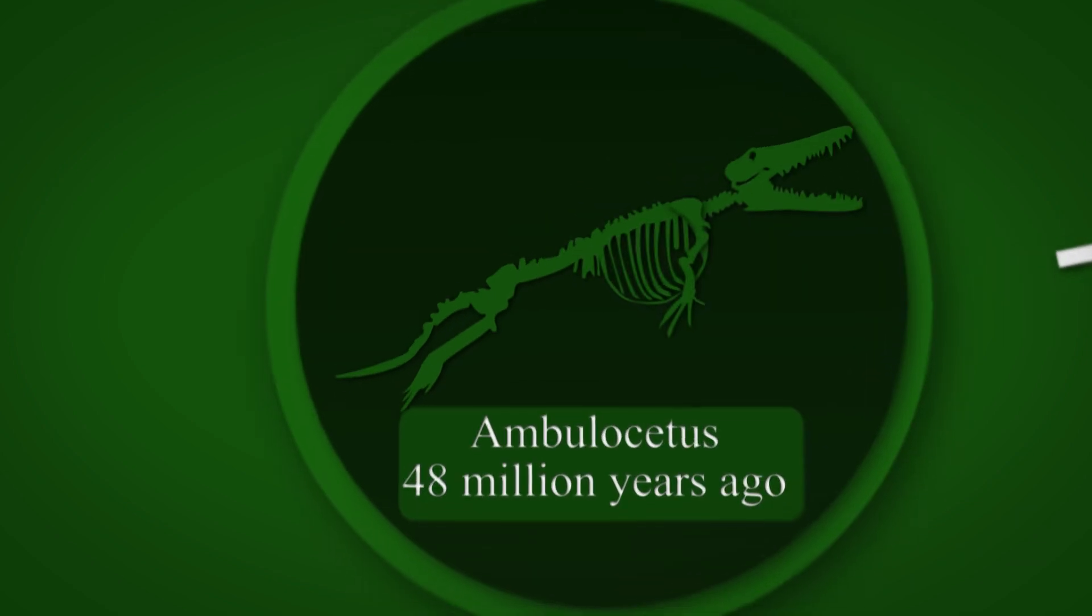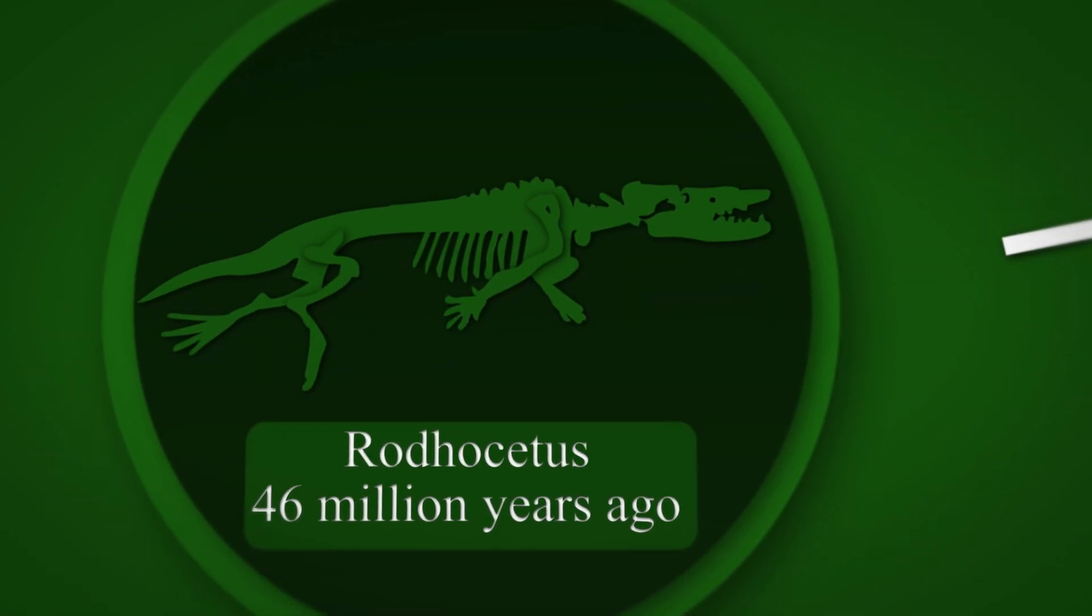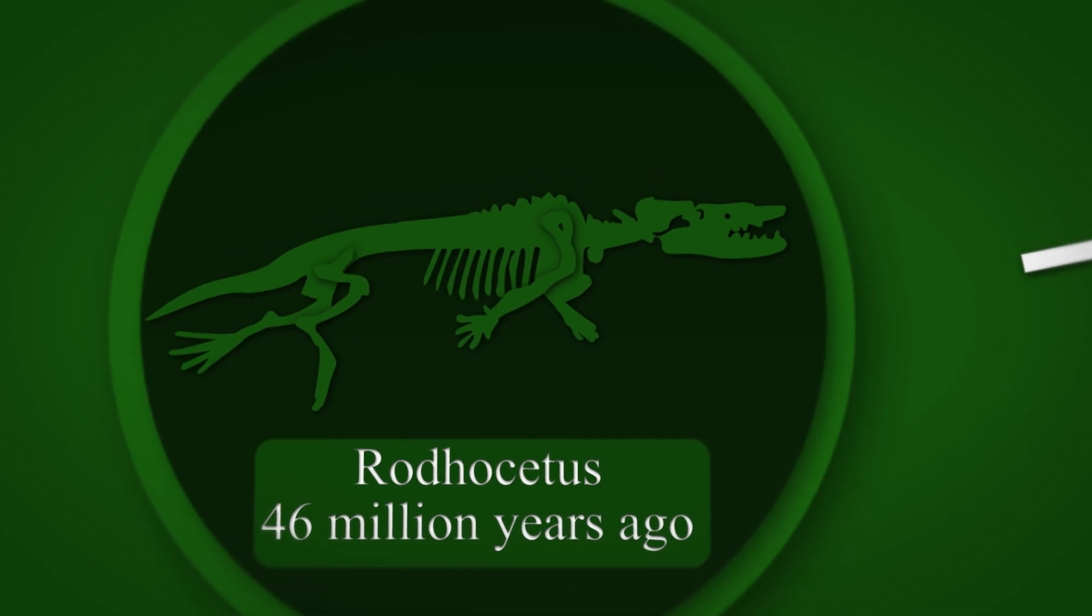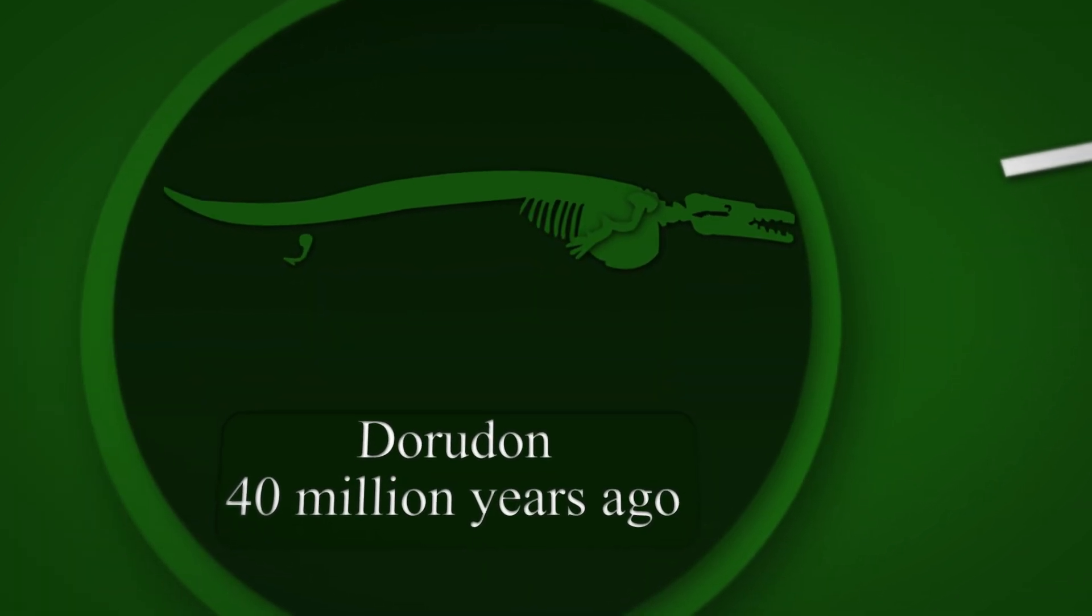The spine and legs were modified to allow for more efficient modes of swimming. Nostrils move toward the top of the skull, later becoming a blowhole, and hind legs eventually shrank to where they could no longer support the animal on land.